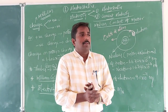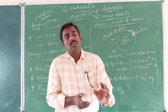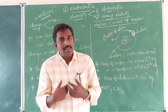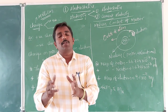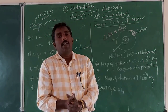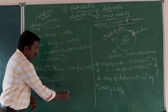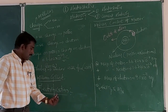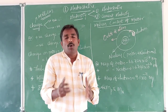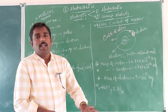When two bodies are rubbed with each other, one body loses some electrons and becomes positively charged, while the other body gains some electrons and becomes negatively charged. After rubbing, these two bodies are electrified. The process of charging a body is called electrification.